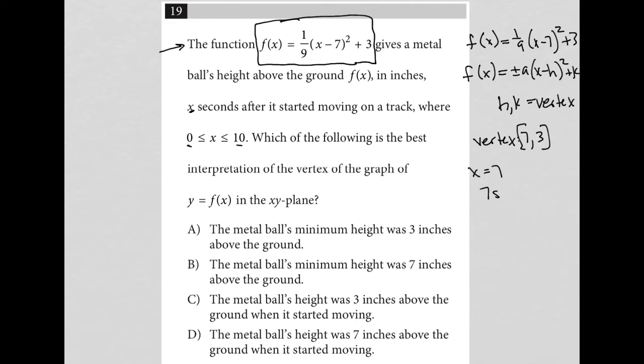Which of the following is the best interpretation of the vertex? Let's see. Choice A: The metal ball's minimum height was three inches above the ground. Well that makes sense because x is for seconds and y is for height. This is literally telling us that at seven seconds we're at three inches.